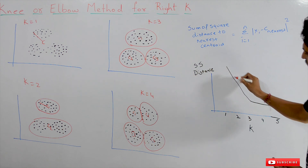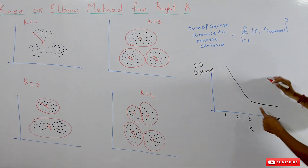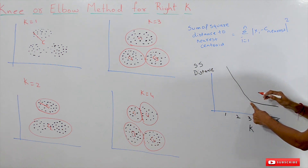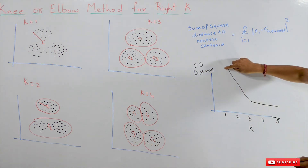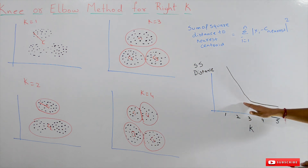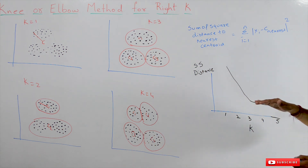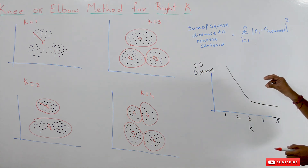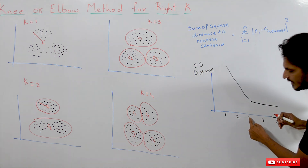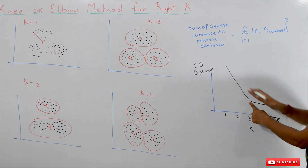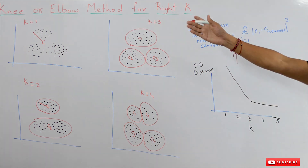Our sum of squared distances drastically reduces at first. Then at a certain K value, the sum of squared distances starts gradually reducing rather than drastically reducing. From K equal to 1 to 3, it is almost linear — it is gradually, slowly reducing. At that turning point we consider it the best K value. This curve is in the shape of an elbow, which is why we get the name elbow method or knee method.